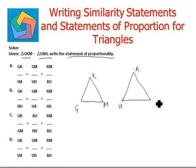To write down the statement of proportionality, we have to take the matching side, that is corresponding sides. So GK corresponds to side UA, therefore the ratio of GK over UA is equal to, the next is GM over UH.